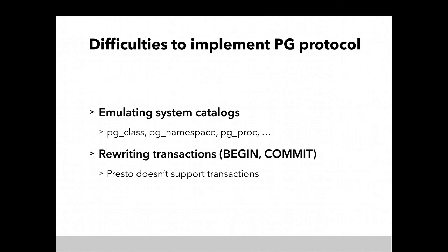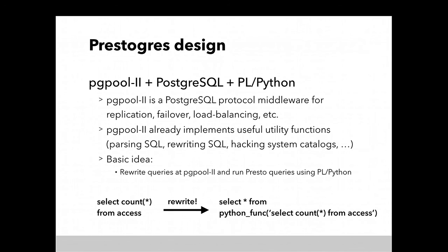So I decided to use a PostgreSQL protocol implementation. There are difficulties to do this. One is emulating system catalogs. Table schema and functions and other metadata are stored on system catalogs — PG_class, PG_namespace, PG_proc, etc. Those are regular tables, and without emulating those actual tables, clients cannot get metadata. There are no special protocol to get metadata — clients just SELECT from those system catalog tables. But those system catalog tables don't exist on Presto, so I needed to emulate them. Another difficulty is transactions — BEGIN and COMMIT are not supported in Presto, so I needed to hack that.